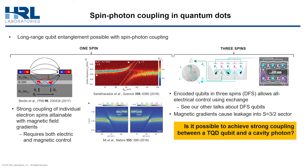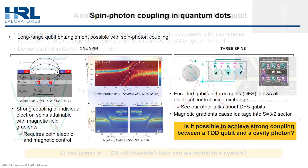Recall that the Hilbert space of this system is eight-dimensional, where half of these states are, from the perspective of DFS, leaked states with S equals three-halves. The issue with magnetic gradients is that they couple the encoded S equals one-half states with the S equals three-halves sector, thereby causing leakage. Therefore, we cannot use magnetic gradients to couple a triple quantum dot qubit to a cavity photon.